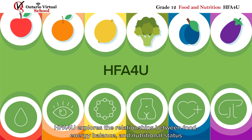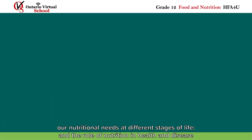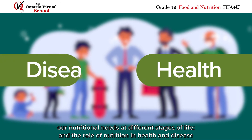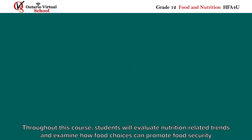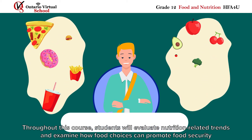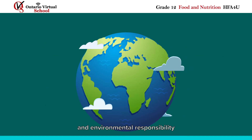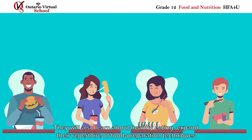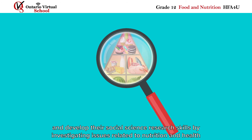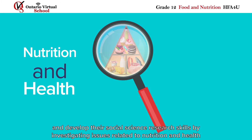HFA4U explores the relationships between food, energy balance, and nutritional status, our nutritional needs at different stages of life, and the role of nutrition in health and disease. Throughout this course, students will evaluate nutrition-related trends and examine how food choices can promote food security and environmental responsibility. They will also learn about healthy eating, expand their repertoire of food preparation techniques, and develop their social science research skills by investigating issues related to nutrition and health.